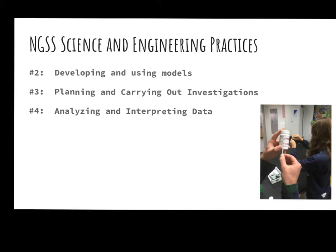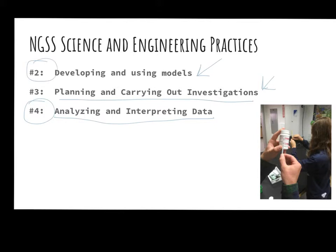Specifically for NGSS science and engineering practices, the big one here is developing and using models, because really that's what an eco-column is — it's building a model ecosystem. The kids are also carrying out investigations and taking a lot of data. This one is a little bit weaker in that they're not particularly setting up hypotheses and experimental design, but they are carrying out investigations using tools. The two strongest practices are two and four for eco-columns.